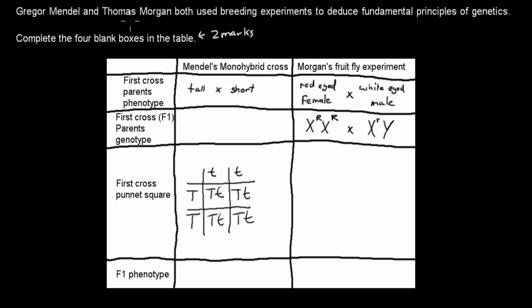The question is: Gregor Mendel and Thomas Morgan both use breeding experiments to deduce fundamental principles of genetics. Complete the 4 blank boxes in the table. That's worth 2 marks.